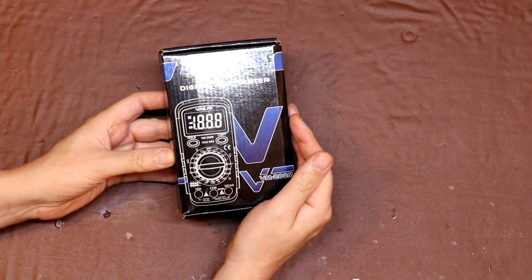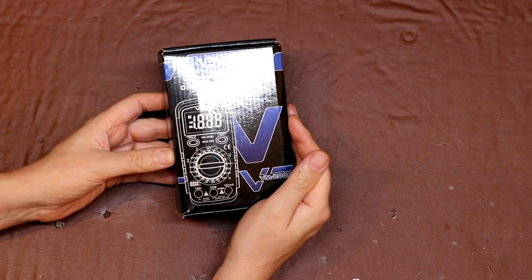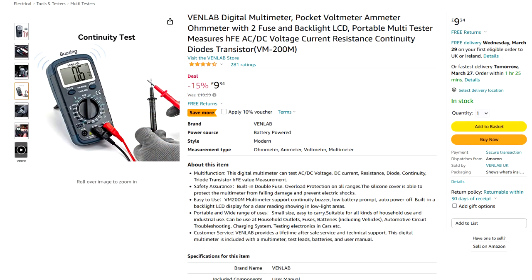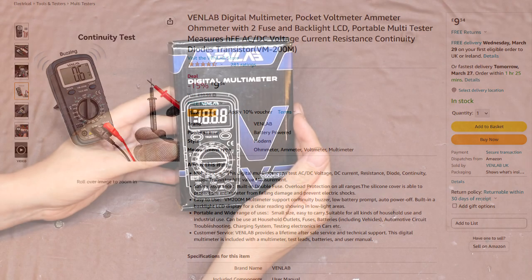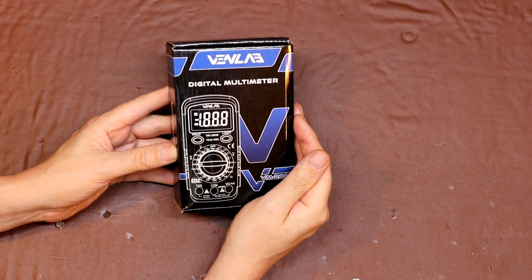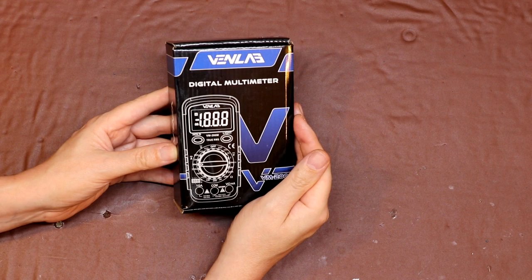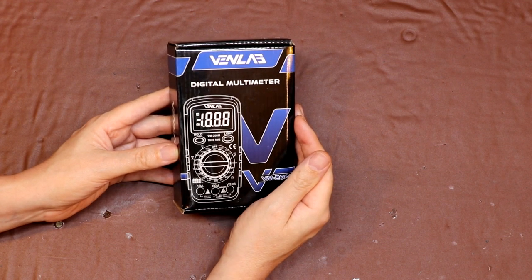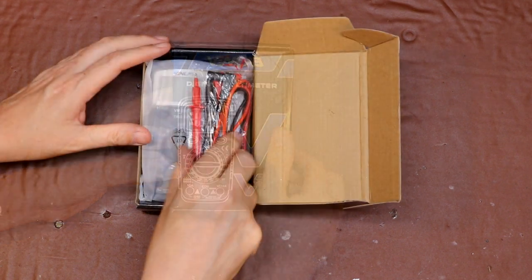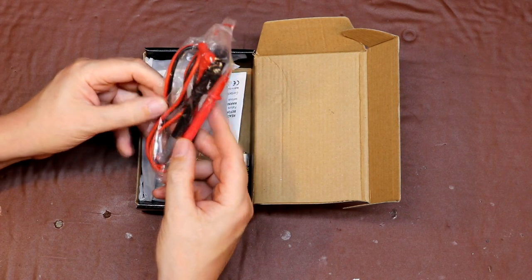The VM200M is a low cost digital multimeter and it retails on Amazon for £9.34. So it really is at the budget end of what you're going to pay for a multimeter. And Venlabs themselves describe this as being a low cost multimeter that will fit in your pocket. So let's take a look inside the box. So it comes with some test probes here.